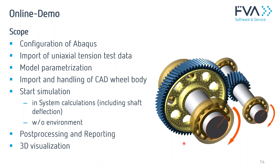I'm through with the first part. I'll now switch to the AFI Workbench for a live demonstration covering: how to couple Abacus, how to get uniaxial tension test data into your model, the possibilities to set up your model including a CAD wheel body, the two options to start the simulation including or not including shaft deflections, and finally post-processing and viewing results.